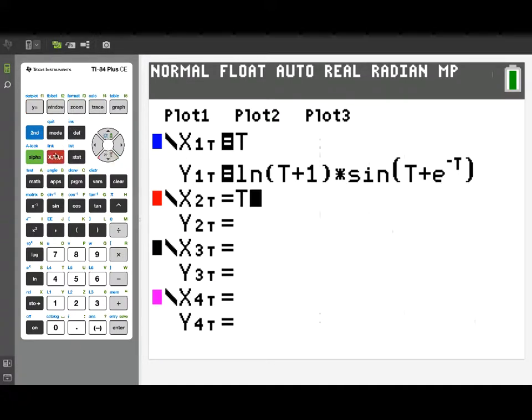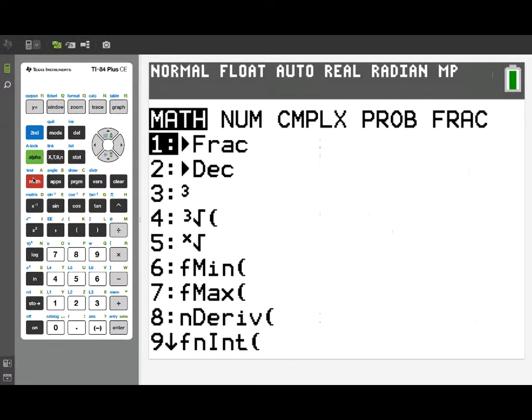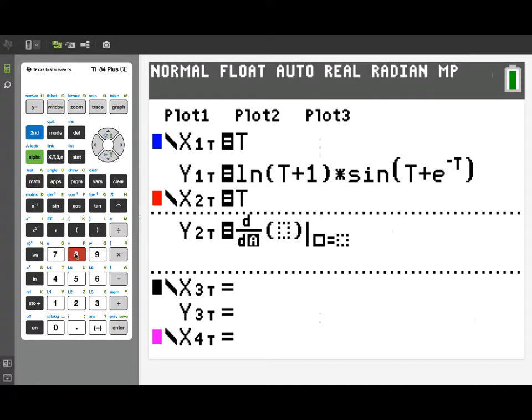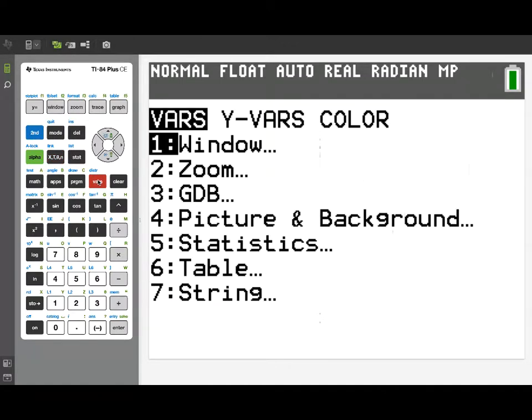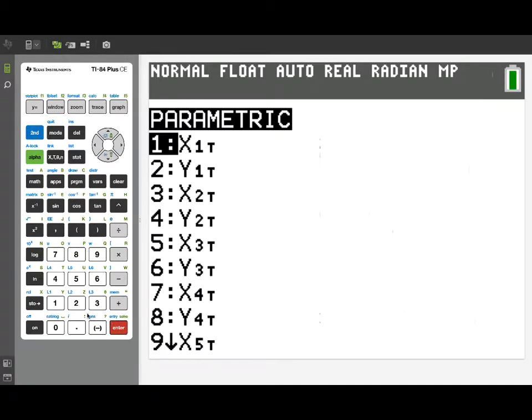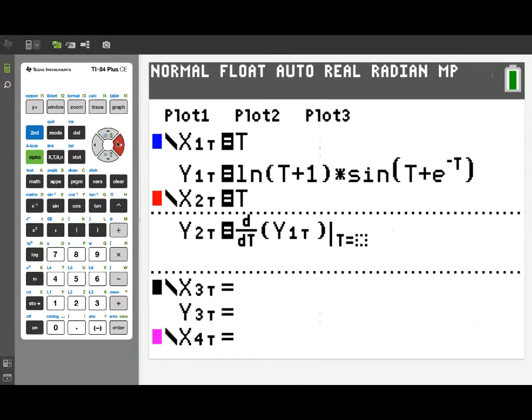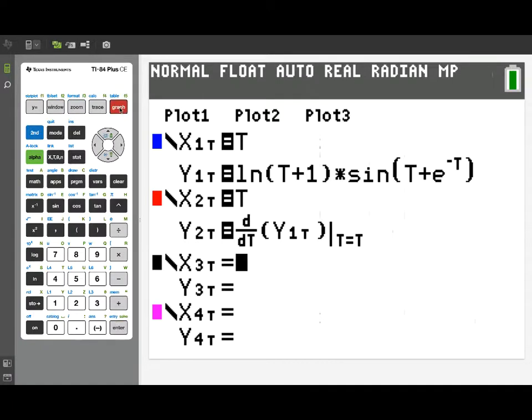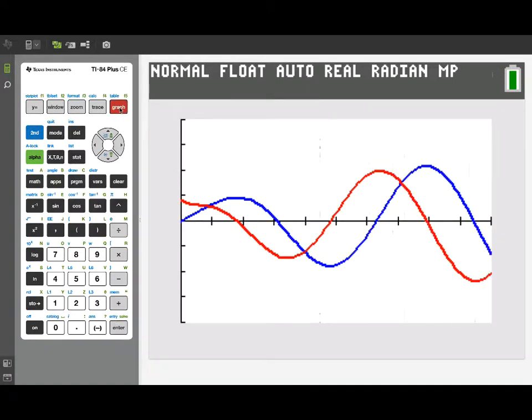So I'm going to define my x2 of t to be just t again, our independent variable, and y2 of t will use n-deriv since acceleration is the derivative of velocity. So we'll take the derivative with respect to t of our y1t variable, get that set up, and then we'll just evaluate at t because we'll be graphing, and now we're ready to graph the acceleration function, which shows up in red here.